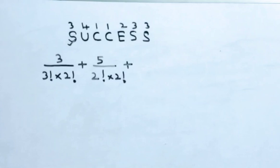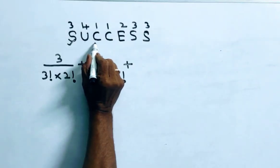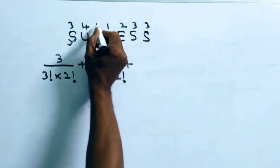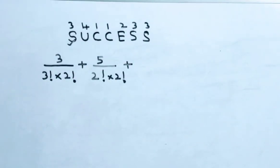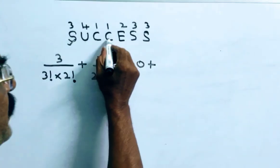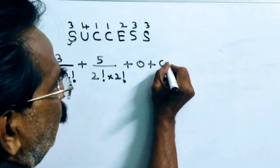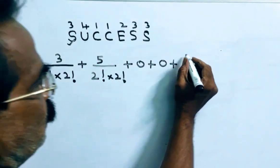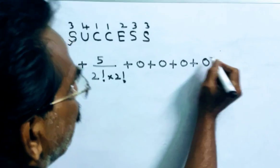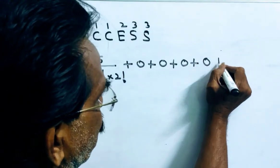And then, coming to this C, friends, how many letters are there to the right of C whose rank is less than 1? 0. Plus, whose rank is less than 1? 0. Whose rank is less than 2? 0. Whose rank is less than 3? 0. Whose rank is less than 3? 0.